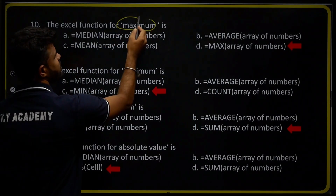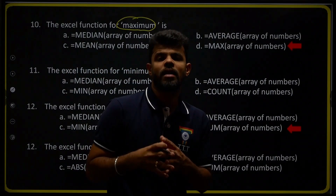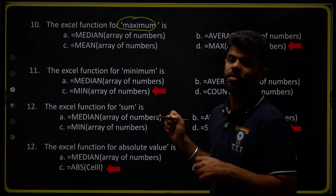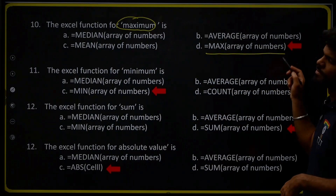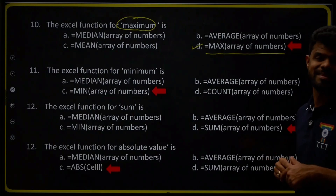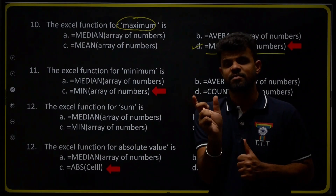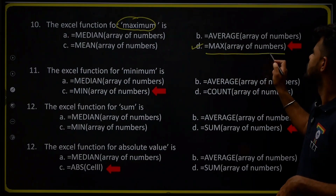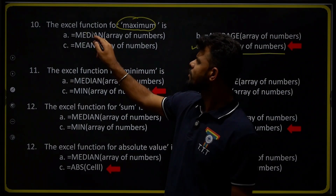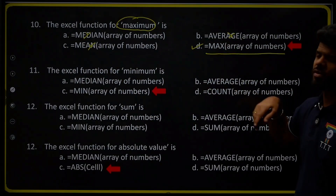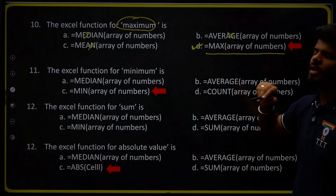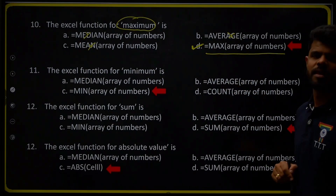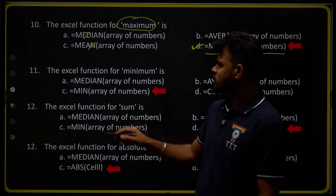Question number ten: the Excel function for maximum value. To identify the maximum value in a dataset we use =MAX(array of numbers). Therefore option D is the right answer. We will not apply MEDIAN, MEAN, or AVERAGE formulas — only =MAX(array of numbers) is the correct formula.